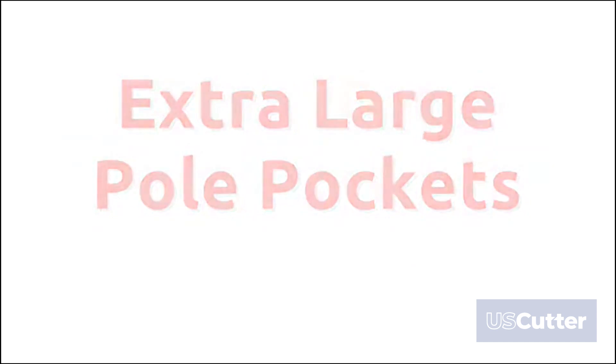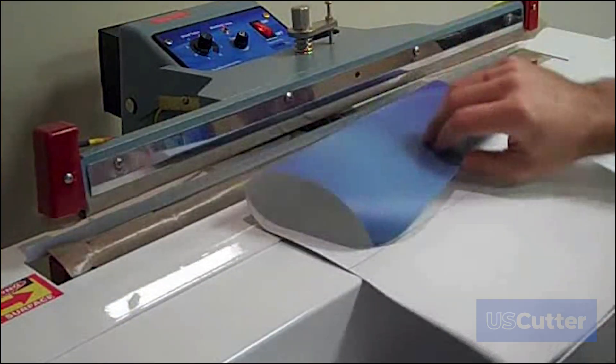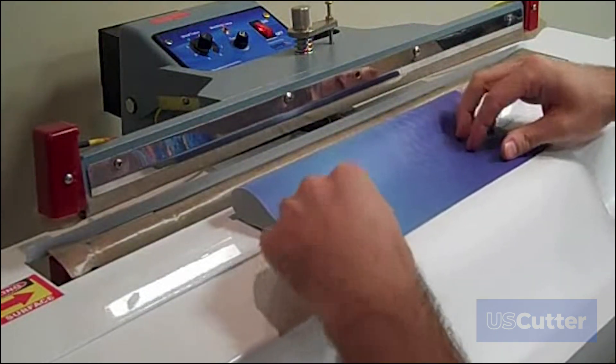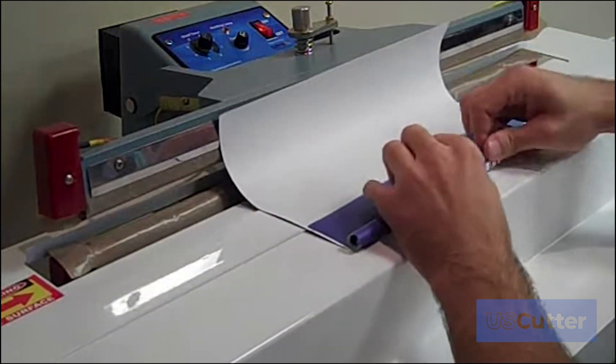Banner Pro can also do extra large pole pockets. First, align the top of the material to the inside line. Then tightly roll up the material to about 1 inch from the space of the intended weld area.